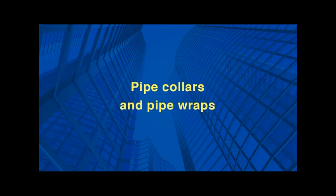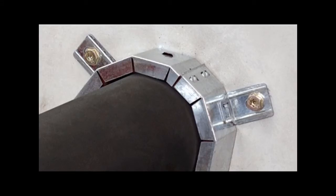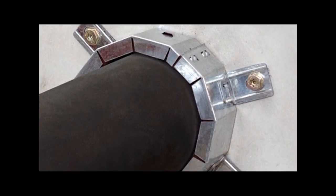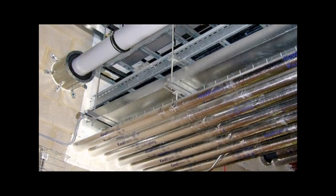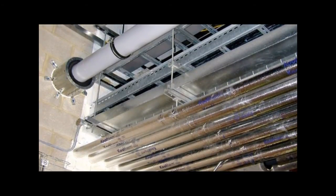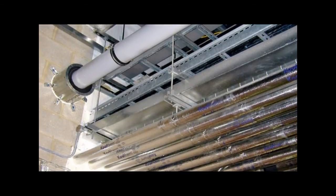Pipe collars or pipe wraps can be used where plastic pipes or plastic trunking pass through fire-resistant floors or walls. Plastic pipes and trunking soften and collapse with heat. This can allow the passage of hot gases and smoke between compartments.